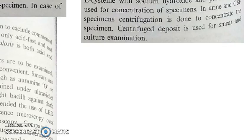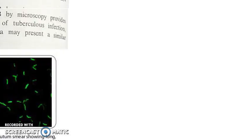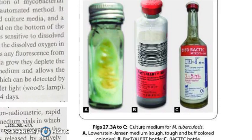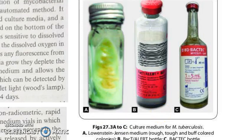Let me show you the Ziehl-Neelsen stain diagram, because if they ask you this question, you will have to draw these diagrams. The slide has a blue background with pink/red acid-fast bacilli. Then I will also show you the Loewenstein-Jensen medium — please remember the spelling. This green medium shows rough, tough, buff-coloured colonies — rough means irregular surface, buff means cream-coloured, and tough means very hard.